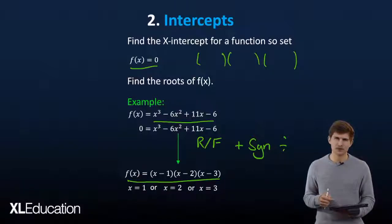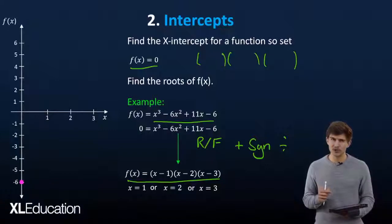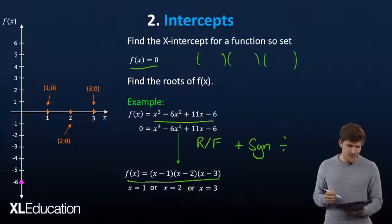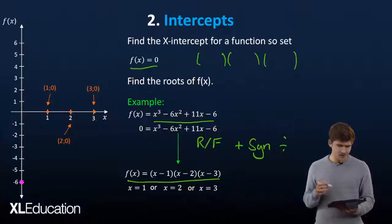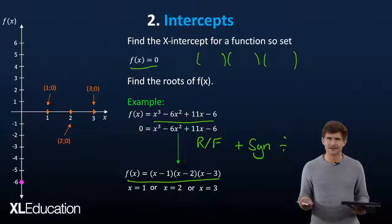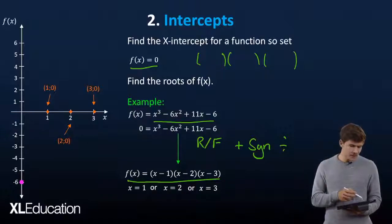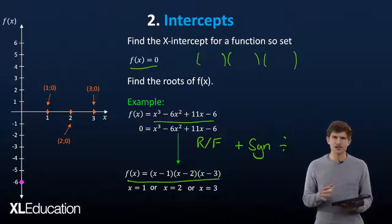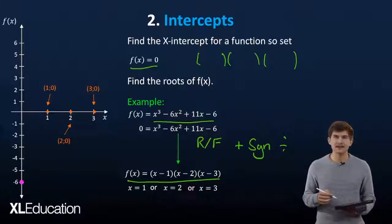Let's quickly see where that plots on our graph, and use this opportunity to check you haven't made a mistake. As you can see they plot at one, two, and three — isn't that satisfying. Things to look out for: if your x-intercept is not on the x-axis, that's an obvious giveaway. Also check if your x-intercepts are on the wrong sides of each other in a way you can't intuitively connect.